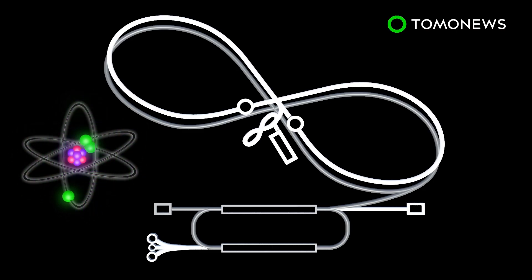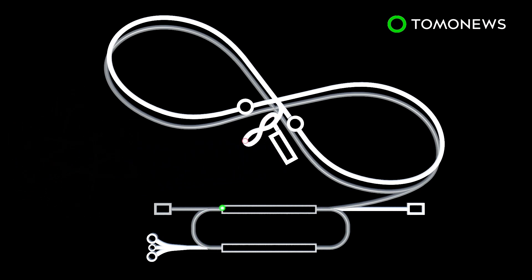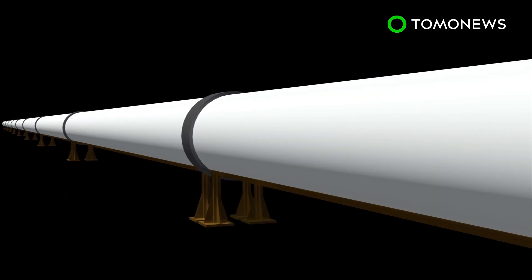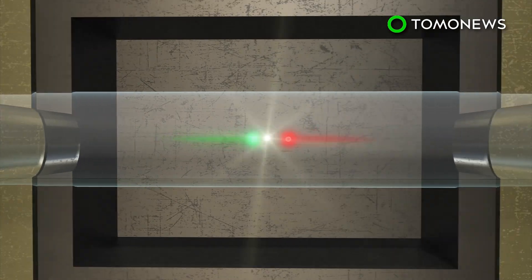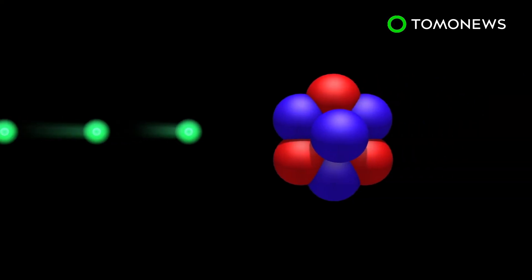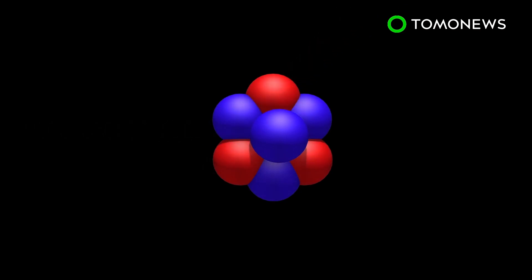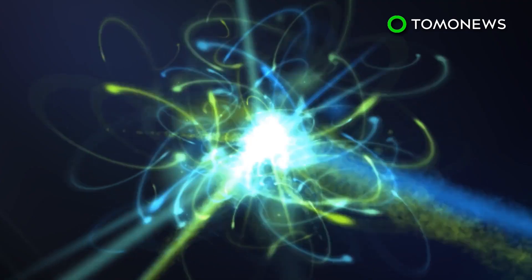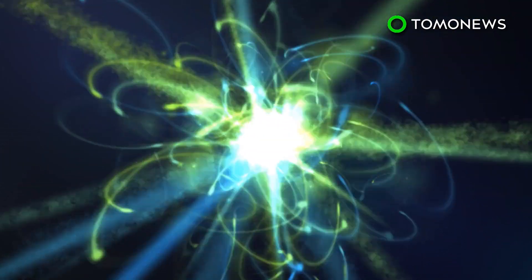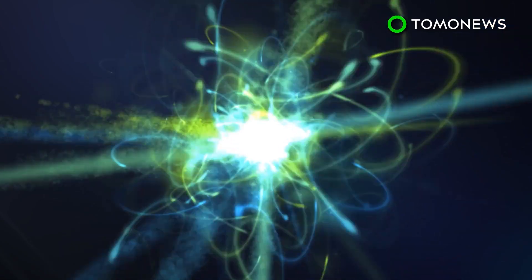The electron-ion collider will consist of intersecting accelerators, one blasting a beam of electrons and the other a beam of protons or ions to nearly the speed of light. The beams are made to collide at intersecting points, which are surrounded by detectors to record the resulting interaction. Each collision generates virtual photons, particles of light that penetrate through the proton or nucleus to tease out the structure within, including the distribution of quarks and gluons. The proposed machine would be able to help physicists understand where the mass of a proton comes from, how it gets its spin, and how gluons work.